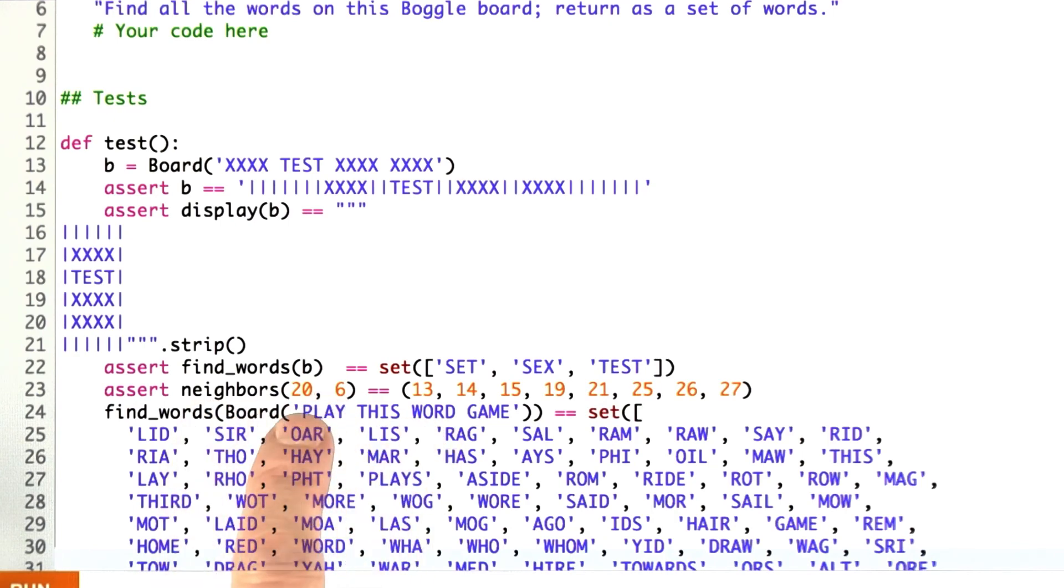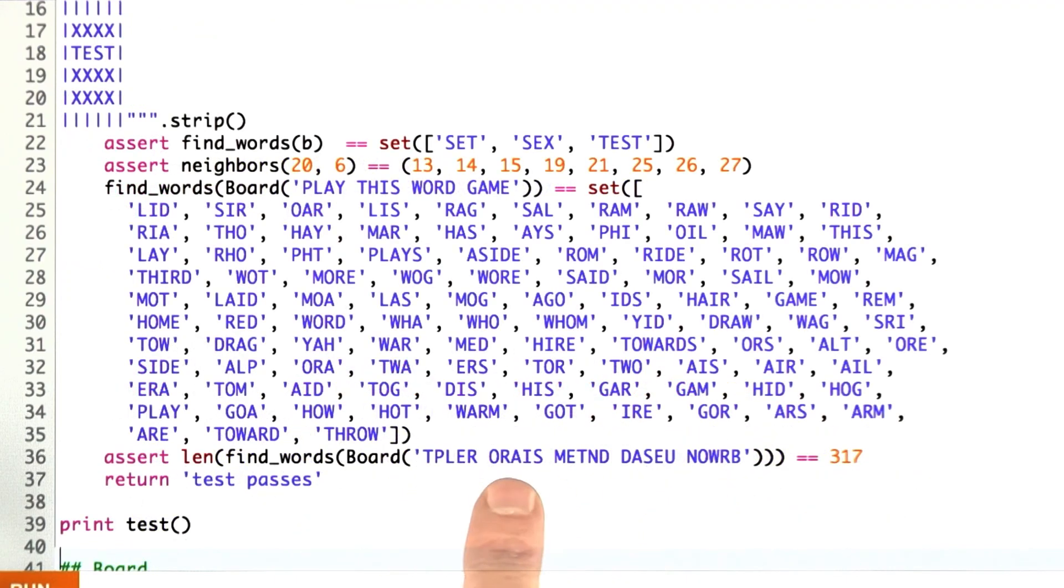I've defined for you a function neighbors, which takes a square location, square number 20, in a 6x6 board and tells you what the neighbors are. Then here's an example for play this word game. Here's the set of answers. For this bigger board with more letters on it, there's 317 words in our small dictionary that was found.